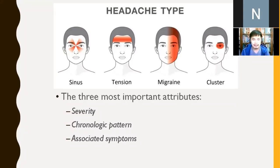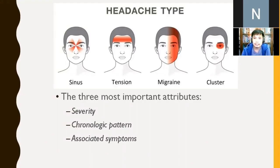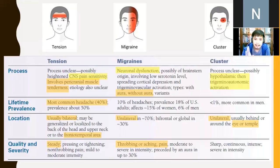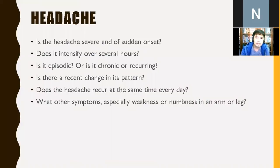We have different types of primary headache: tension, migraine, and cluster/sinus. Your paranasal sinuses, when infected, can cause facial pain or headache. Migraine and cluster headaches occur more unilaterally, while tension headache is usually bilateral at the temporal areas. You have to ask: Is the headache severe or sudden onset? Does it intensify over several hours, or is it episodic?